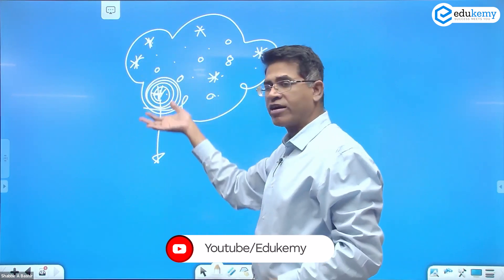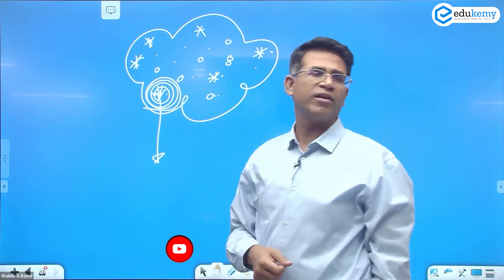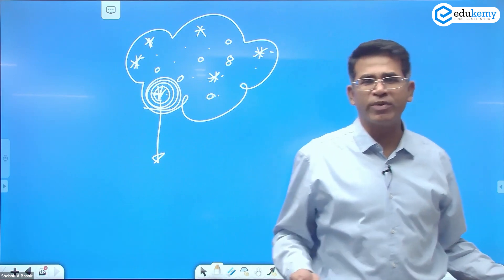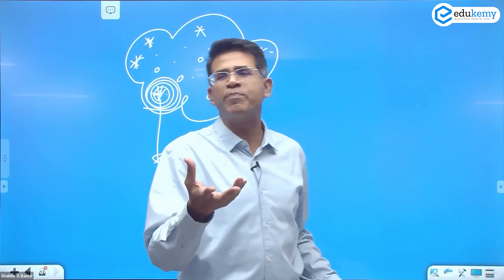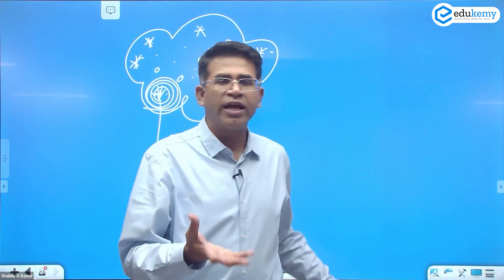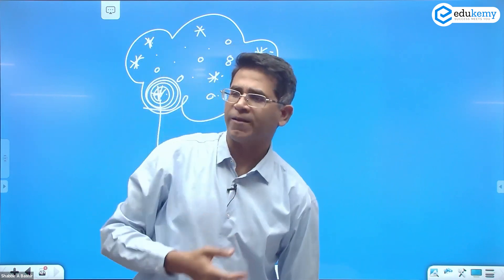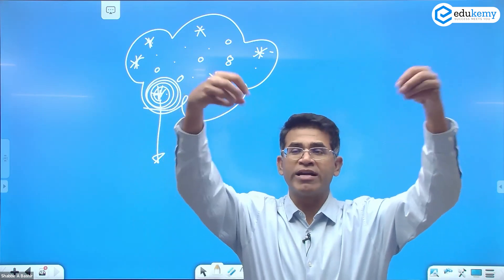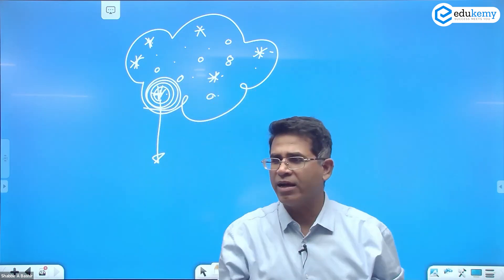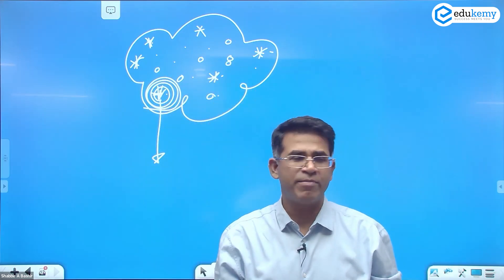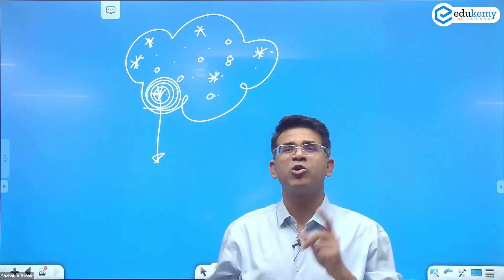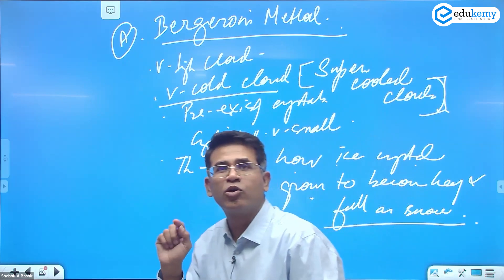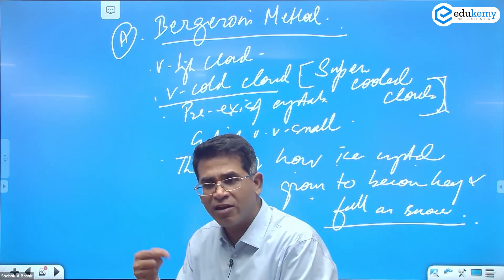It's like asking why a ship does not sink - the buoyancy on the ship is so much that it keeps the ship floating. But if you add weight to it or the buoyancy decreases, the ship starts sinking down. Same mechanism. Bergeron's theory is about how ice crystals grow to become heavy and then fall as snow.